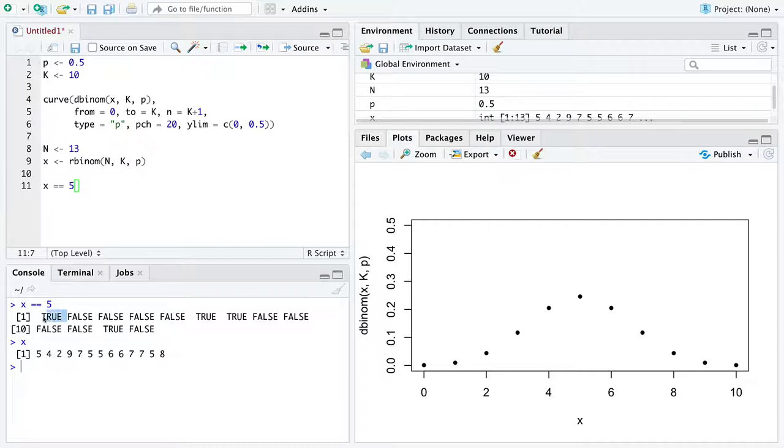And if we hit enter and look at x, we can see the first value of x is indeed equal to five. So it responds true. The second value of x is not equal to five, so it says false. The third value of x is not equal to five, so it says false. The fourth and fifth values are also not equal to five, but the sixth is. So four, five, and six. Okay, so equals equals is like asking the question, which values of x are equal to the thing on the right side.